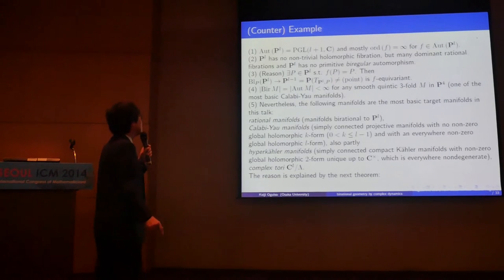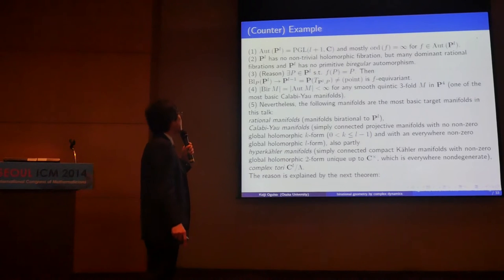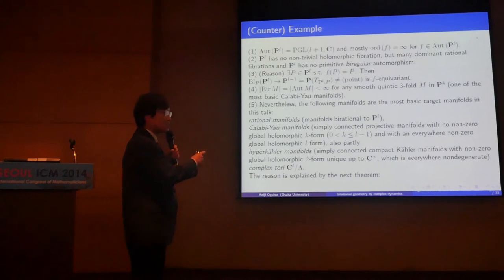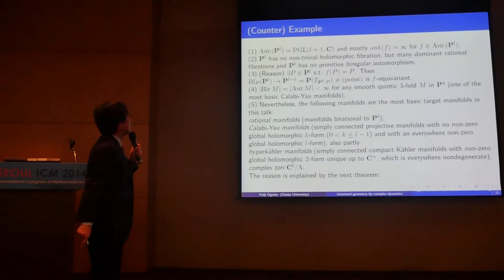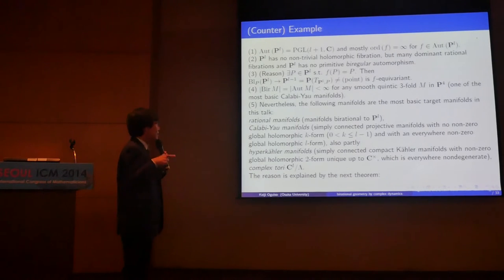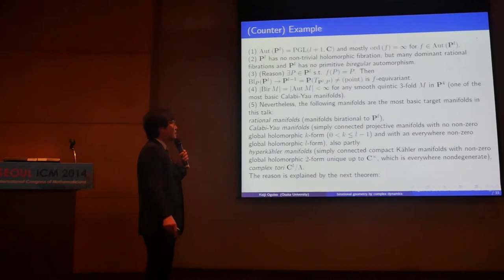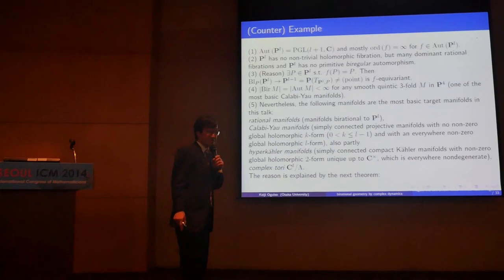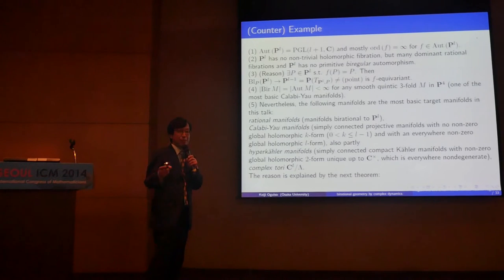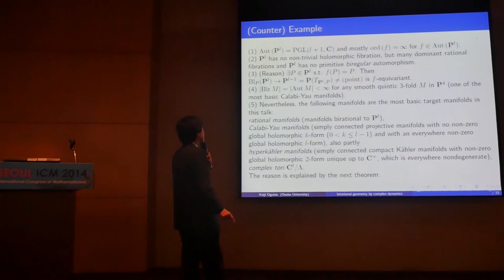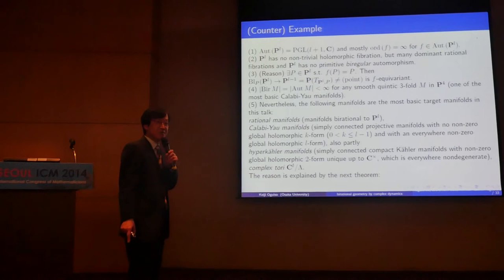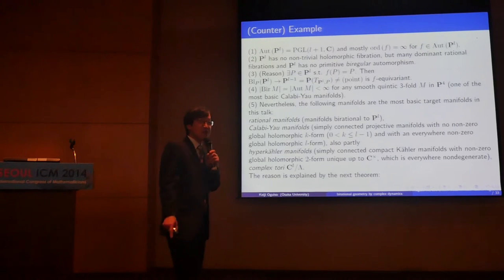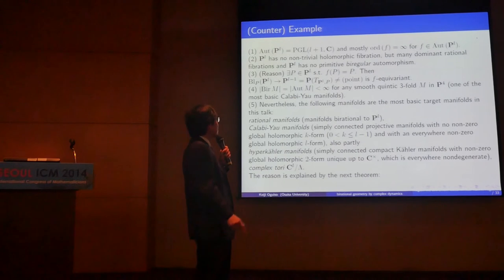The reason is almost clear. If you have some automorphisms, then there is some fixed point, and one can just blow up that fixed point. We get an equivariant morphism, which gives equivariant rational fibrations in terms of PL. Next, let us consider a smooth quintic 3-fold. This is a Calabi-Yau 3-fold, and there are many contexts. In this case, the birational automorphism group and automorphism group are both finite — this is because M is minimal with Picard number 1. Being minimal implies all birational automorphisms are pseudo-automorphisms, i.e., isomorphic in codimension 1.